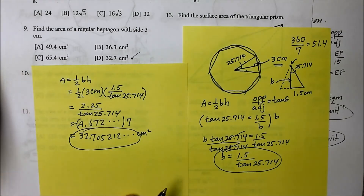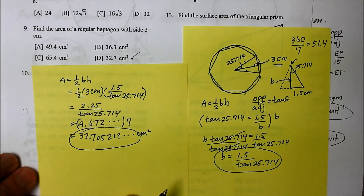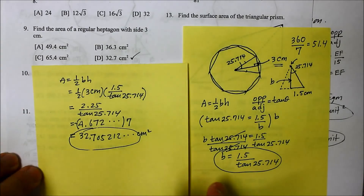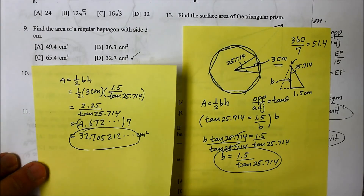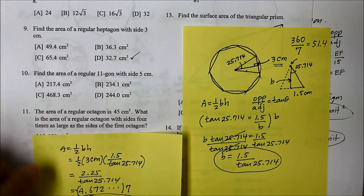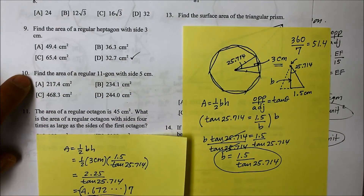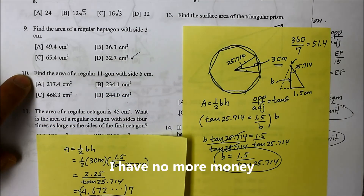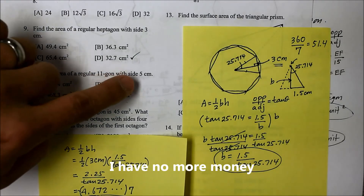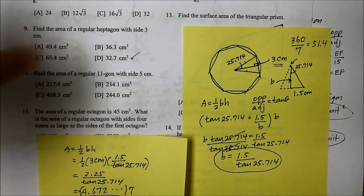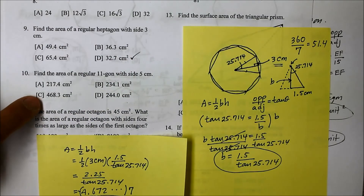If you think you've got that, for the next instructional video, try finding the area of a regular 11-gon — a polygon with 11 sides — where each side is 5 centimeters. Come on, try it!